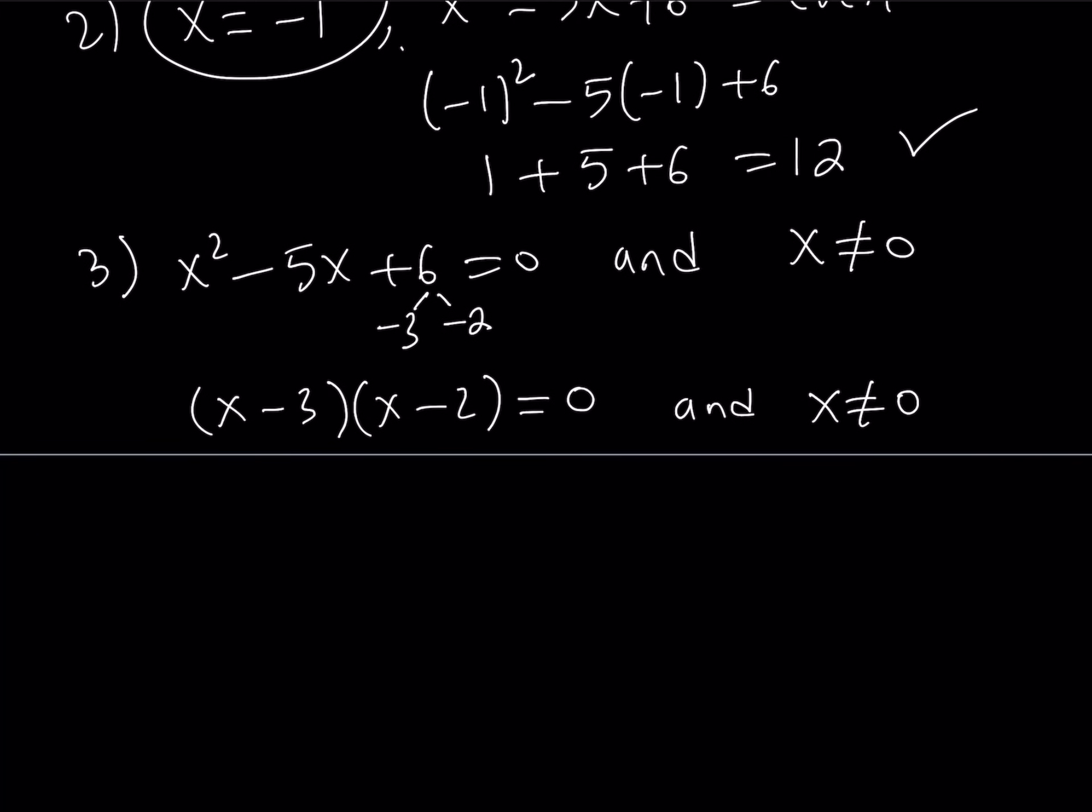So from here, using the zero product property, I can safely say that if x minus 3 is equal to 0, then x is equal to 3. If x minus 2 is equal to 0, then x is equal to 2. And notice that none of these values are equal to 0.